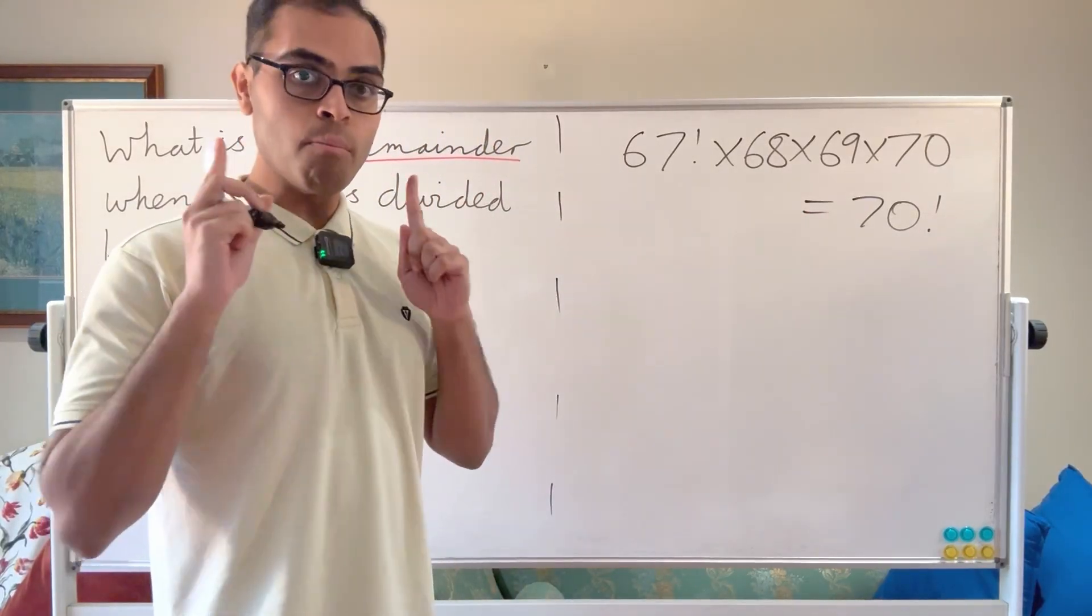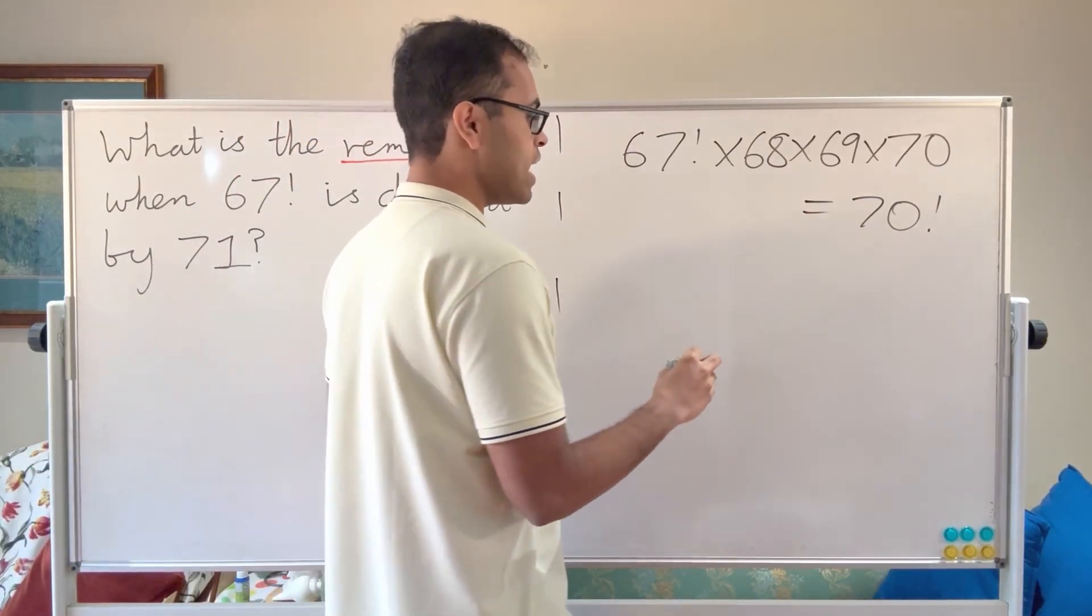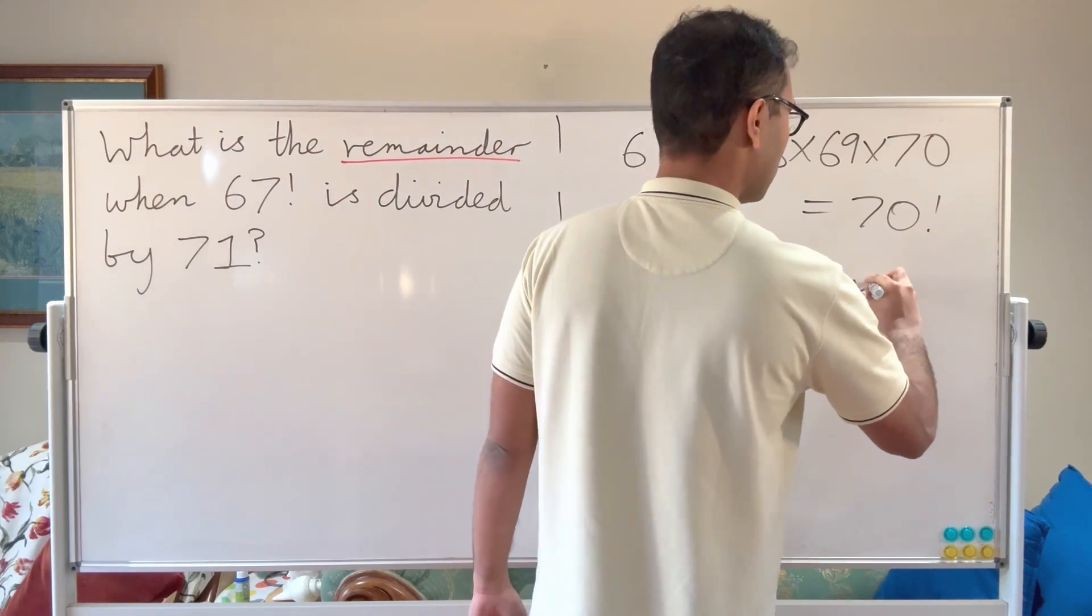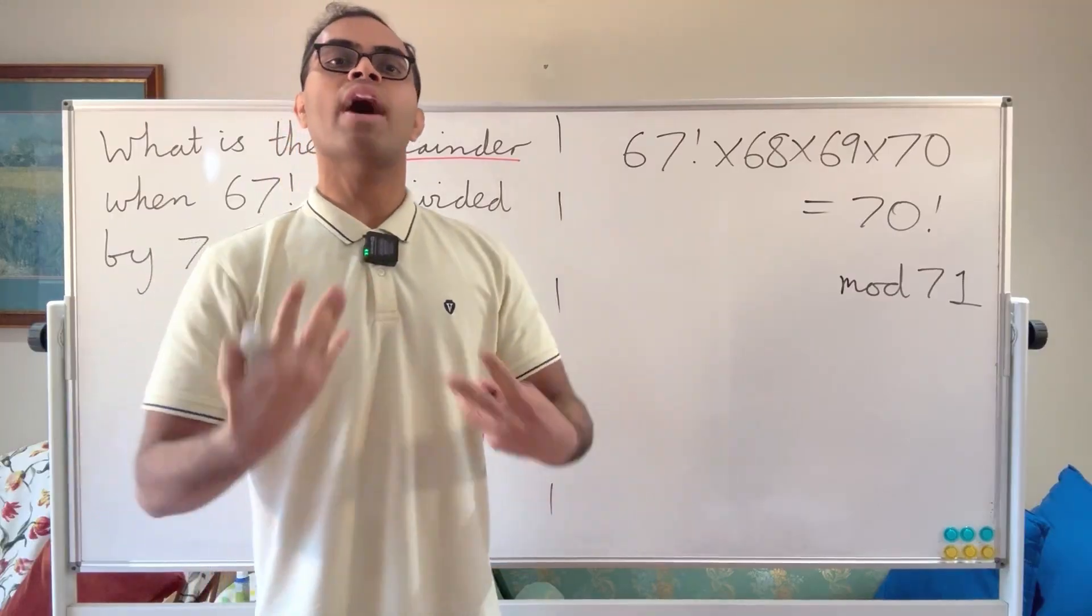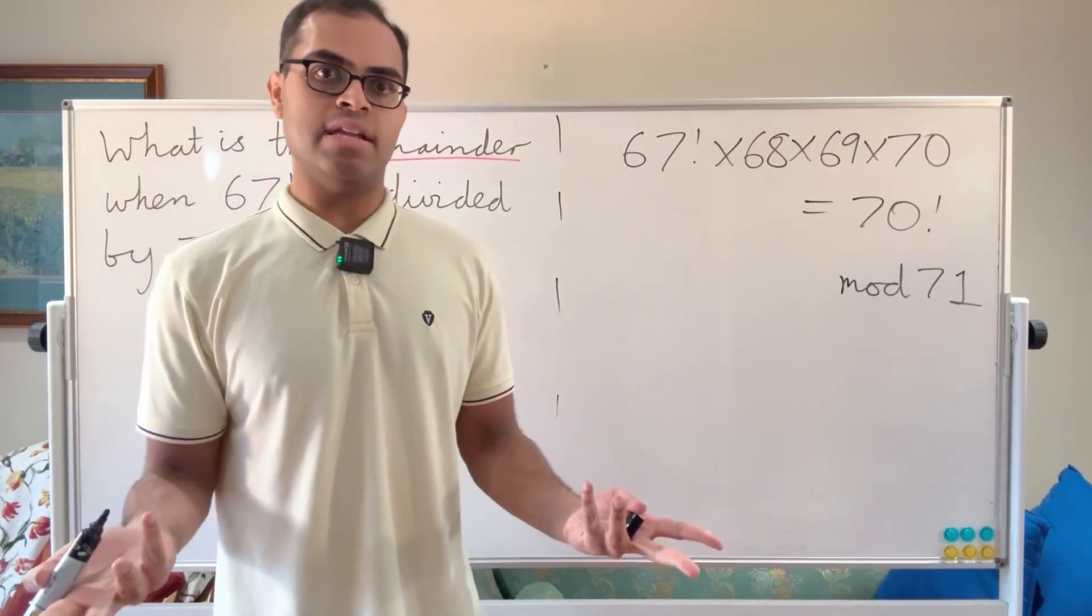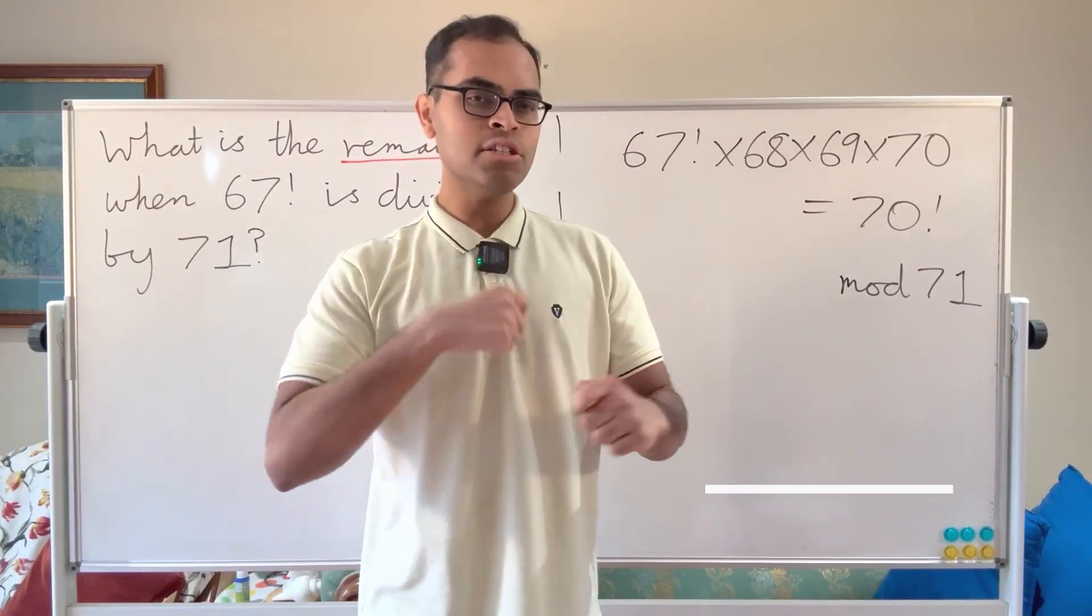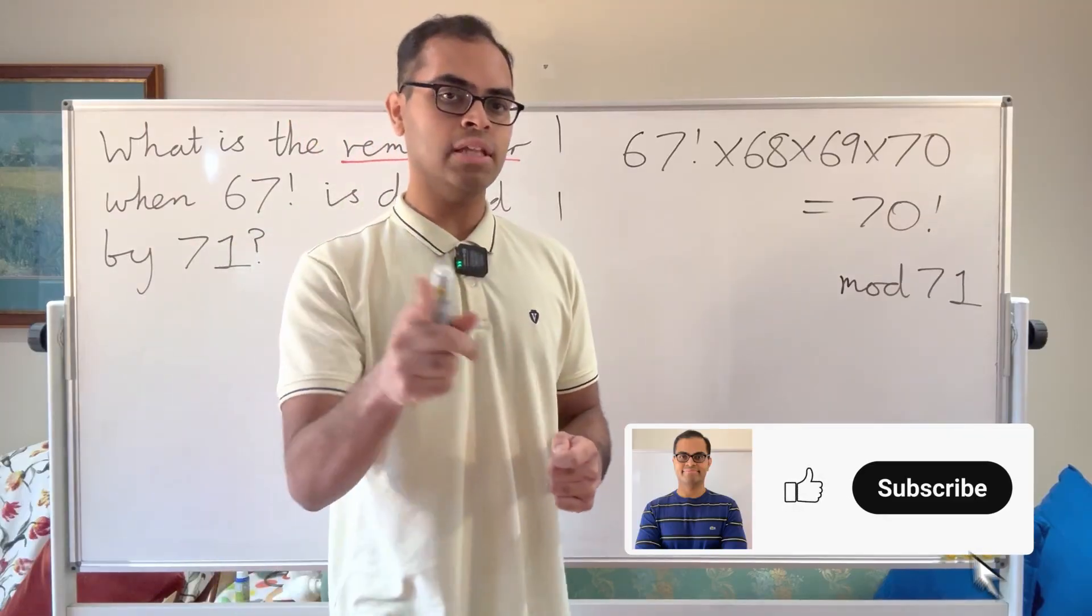Now we're going to do modular arithmetic. We're going to look at everything modulo 71. When you take something modulo 71, that means you're dividing by 71 and taking the remainder. It helps us manipulate expressions. You're going to see shortly how that works.